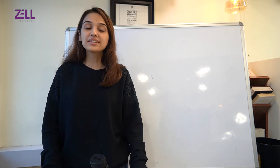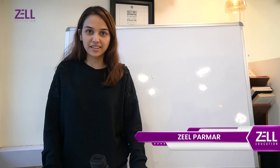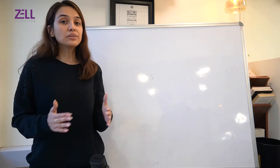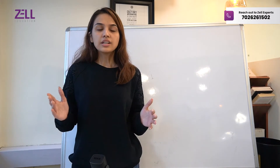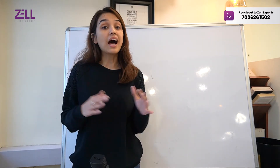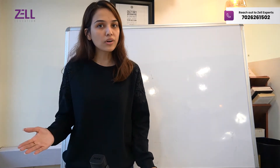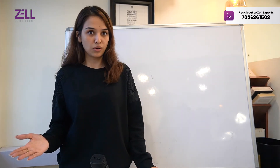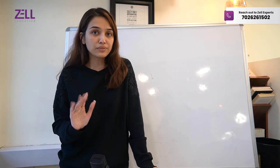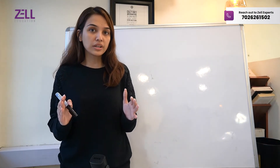Hi guys, welcome back! In today's video we are going to talk about management accounting, under which we're going to break down EOQ. EOQ is Economic Order Quantity. Let's take an example of Zara — Zara has an annual demand of 10,000 shirts a year, the cost of placing one order is two dollars, and the cost of holding one unit for one year is five dollars.